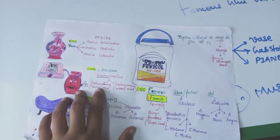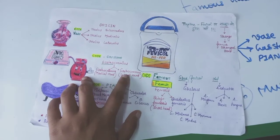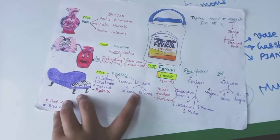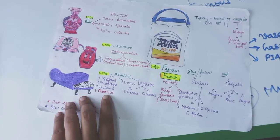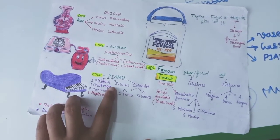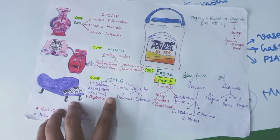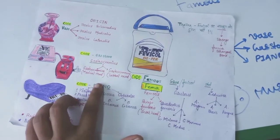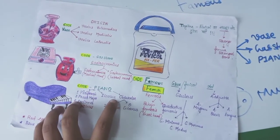Gastrocnemius medial head and lateral head, both of these have origin. Then the piano, all have insertion except popliteus. P for piriformis, then psoas major, pectineus, and popliteus. I for iliacus, O for obturator internus and externus.